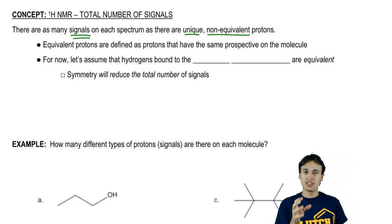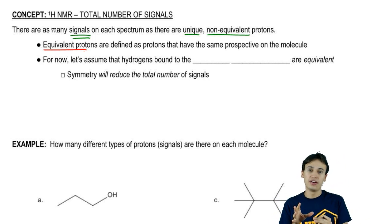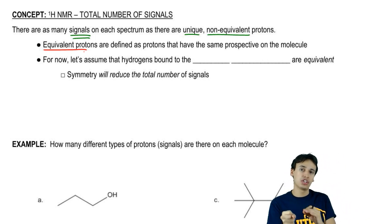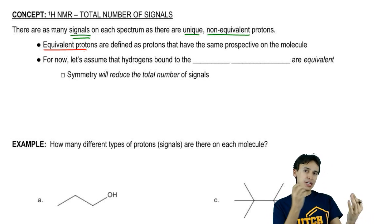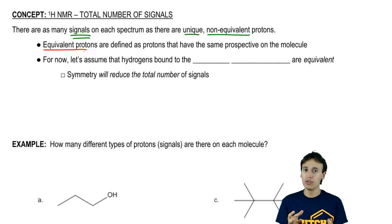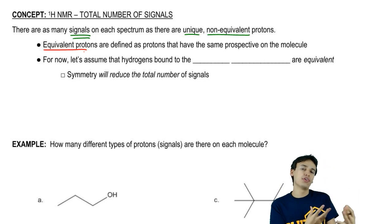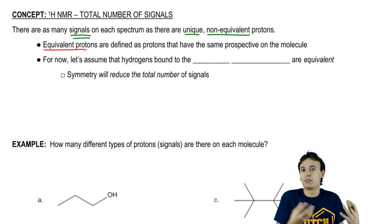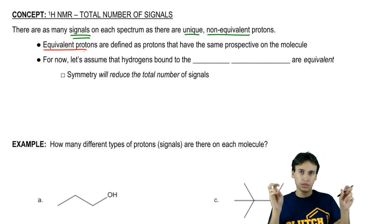For that, we need to understand what's an equivalent or non-equivalent proton. An equivalent proton is going to be a proton that has the same perspective on the molecule as another proton. If two protons are in pretty much the same place on a molecule, like for example, the three protons that are attached to a methyl group. A methyl group usually has three H's on it. All three of those would be said to have the same position on the molecule. All three of them would be what we call equivalent.